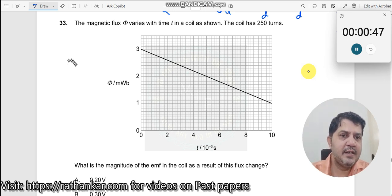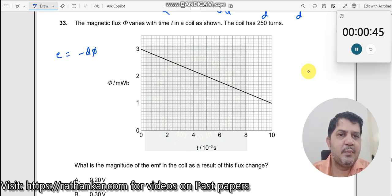You can now say induced EMF E is equal to minus dφ divided by dt, delta phi by delta t. What is delta phi by delta t here? Slope. So it should be minus slope.